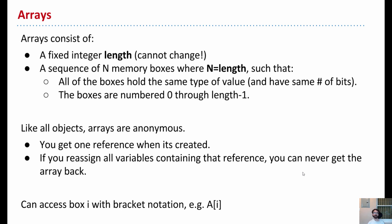Those boxes, by the way, are numbered. So you'll think of the front box as box 0, the next box is box 1, the next one is box 2, and so forth. And, of course, like any object in Java, arrays are anonymous.